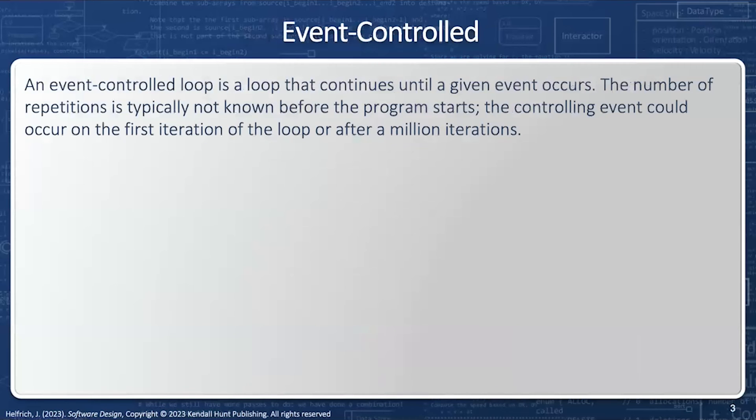The first is the event control loop, and this is a loop that continues until a given event occurs. The number of repetitions is typically not known before the program starts. The controlling event could occur at the first iteration or after a million. We just don't know when.